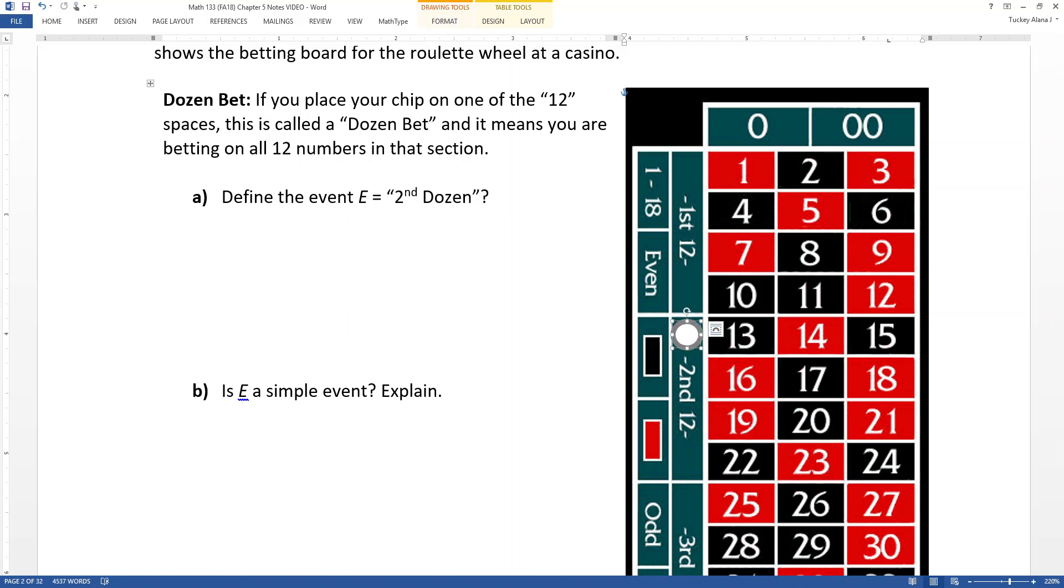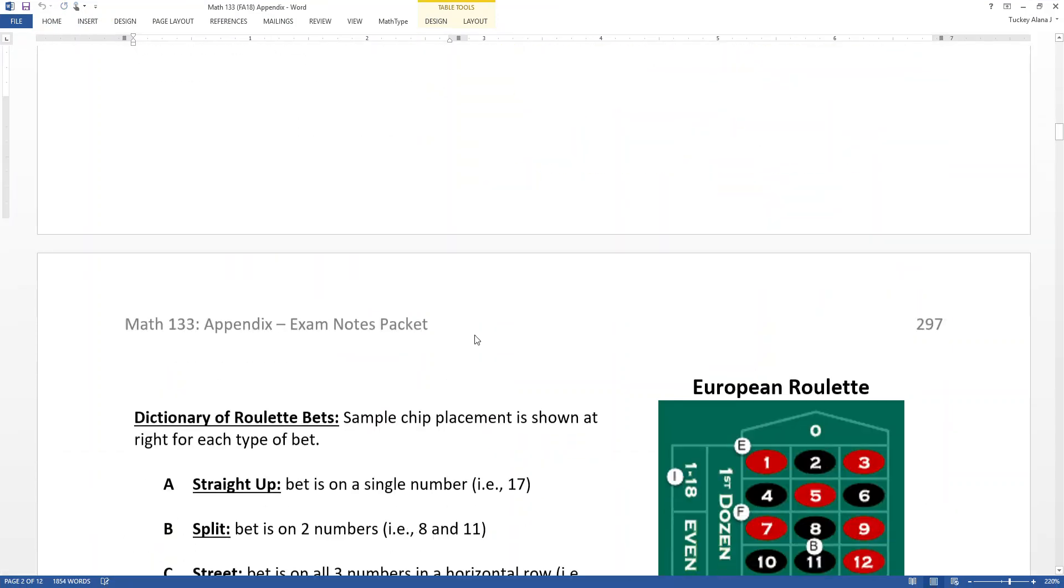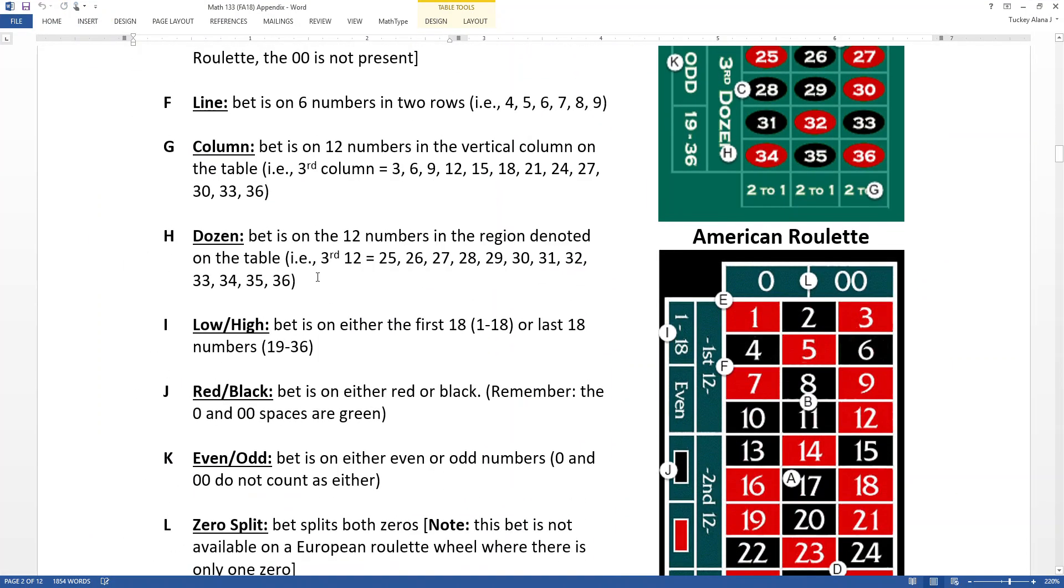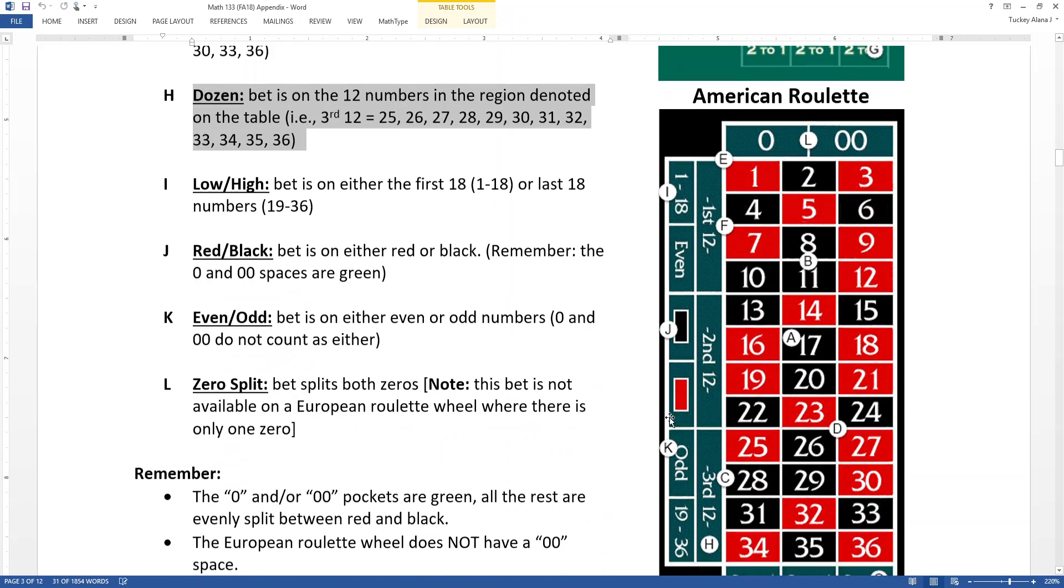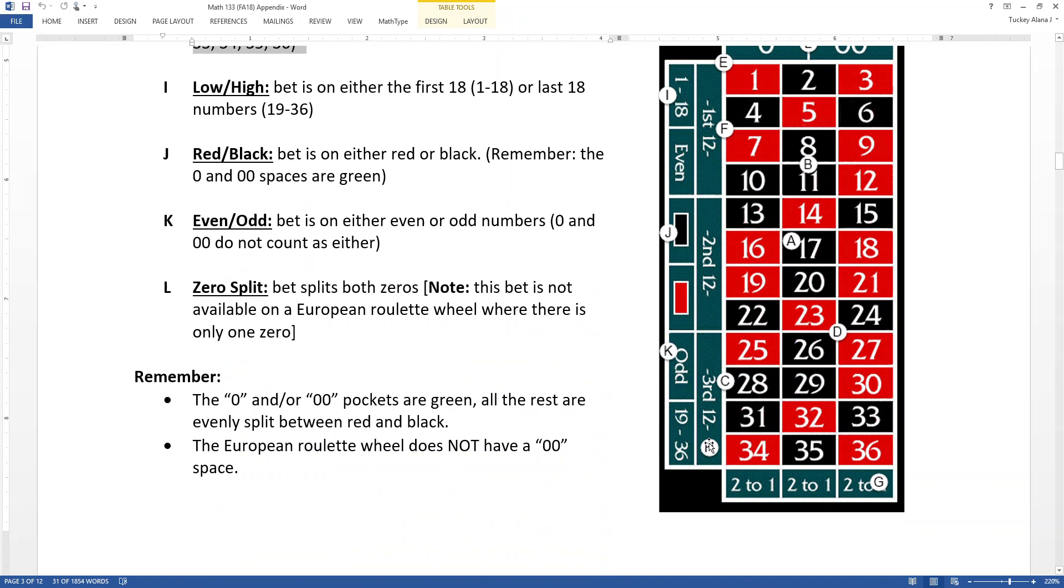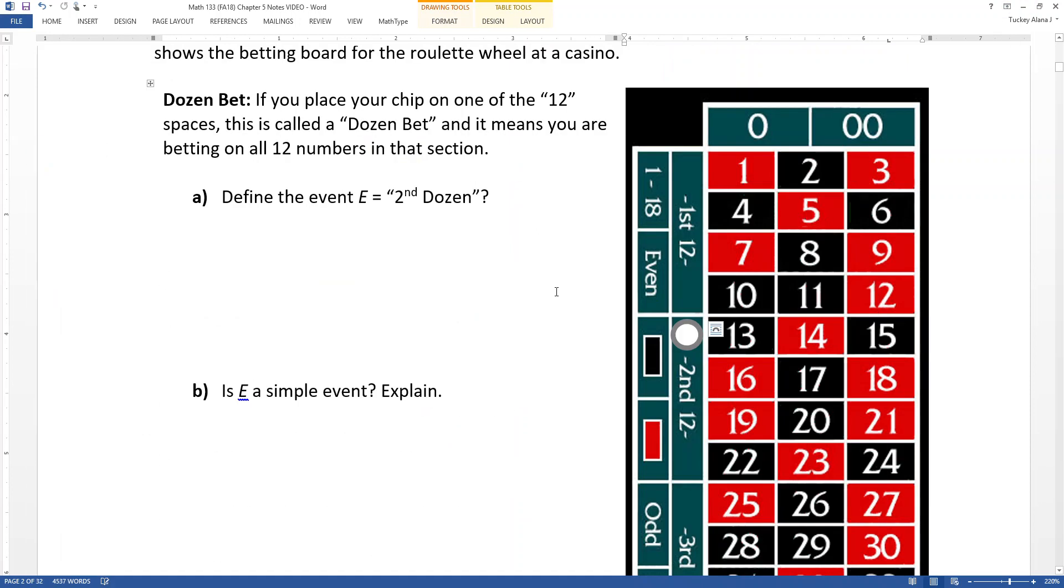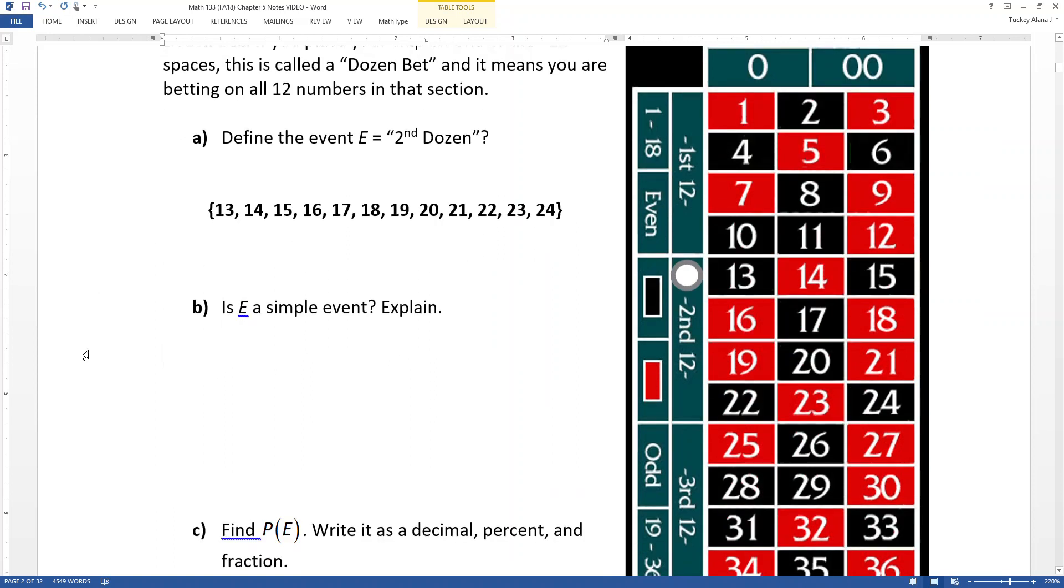Now remember, you don't have to memorize any of that. It's all in the appendix right here. A dozen bet, right? When you bet your number are on 12 numbers in the region. So for example, I've got letter H down here in this picture. Letter H means you're betting on all 12 of those numbers and so on. Okay, so define the event E, second dozen. Well, that would be 13 up through 24. I'll list them all out this time. So 13 up through 24, including them.